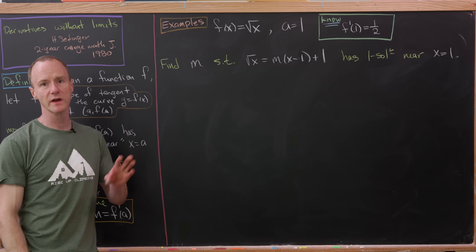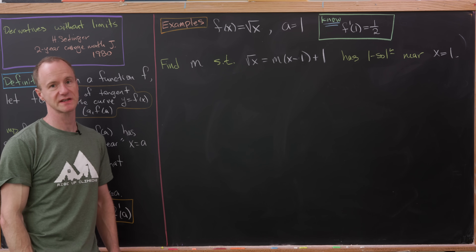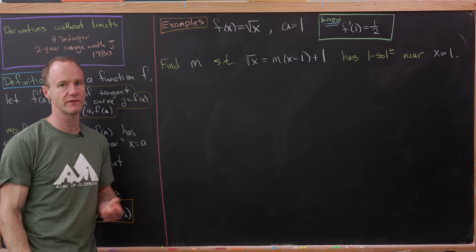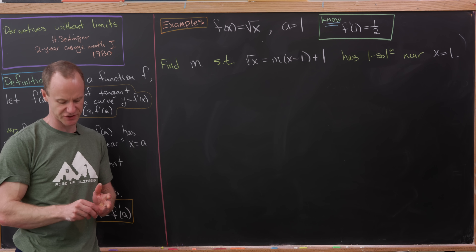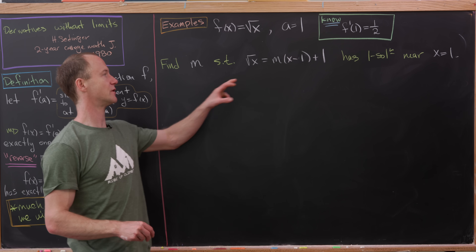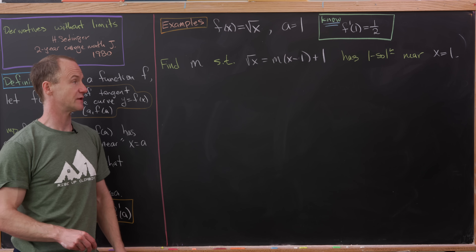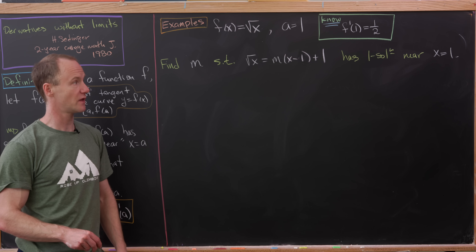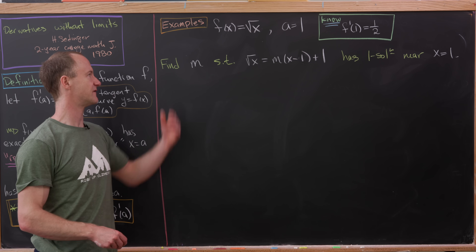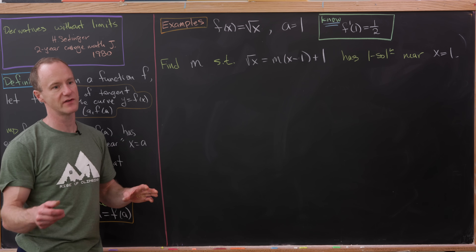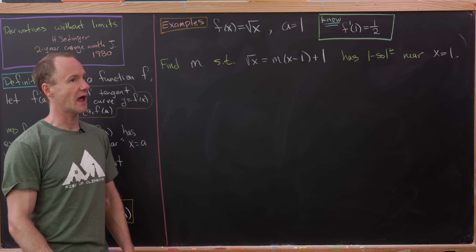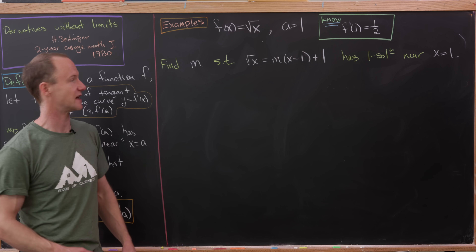For our next example, we'll take f of x equals the square root of x, with our point a equals 1. We know the derivative of this function at 1 is 1 half, just by the power rule. Let's see if we can find an m so that the square root of x equals m times x minus 1 plus 1 has one solution near x equals 1, and see if this m coincides with the derivative.